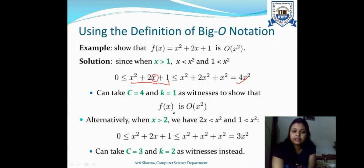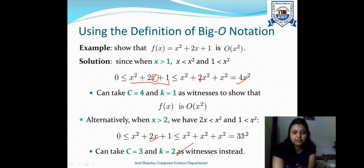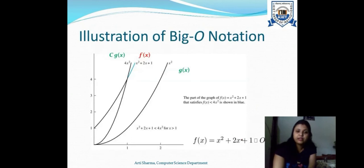Alternatively, when x > 2, we have 2x < x² and 1 < x², so replacing gives x² + x² + x² = 3x², with c=3 and k=2. In both cases the higher order term is x², confirming f(x) is O(x²). This function and the bound c·g(x) can also be shown graphically, where at value k=1 the blue line f(x) lies below c·g(x).